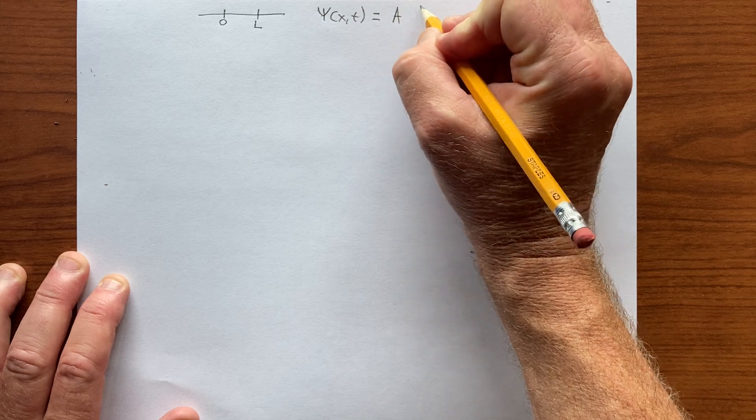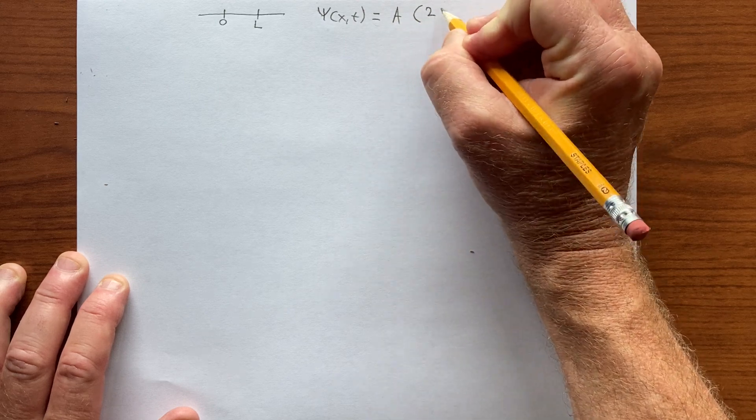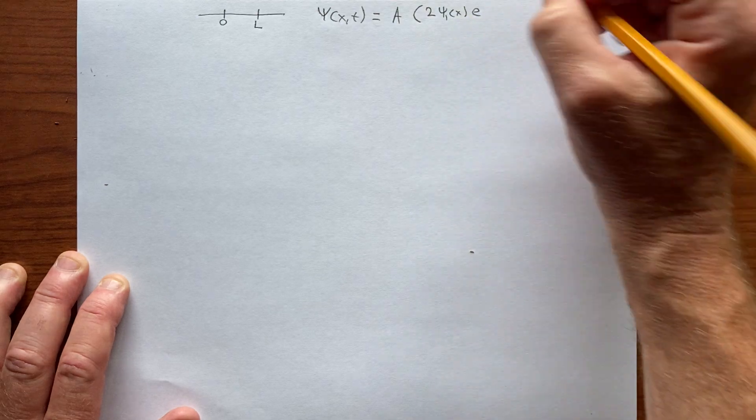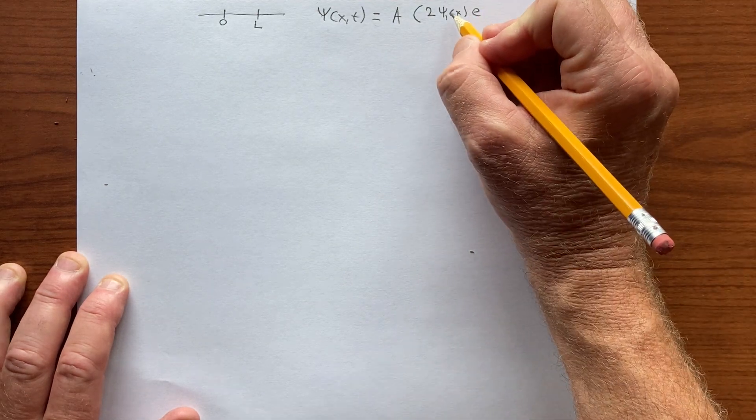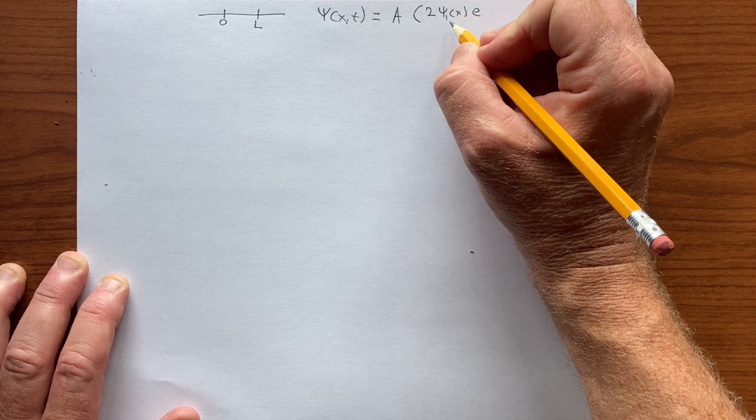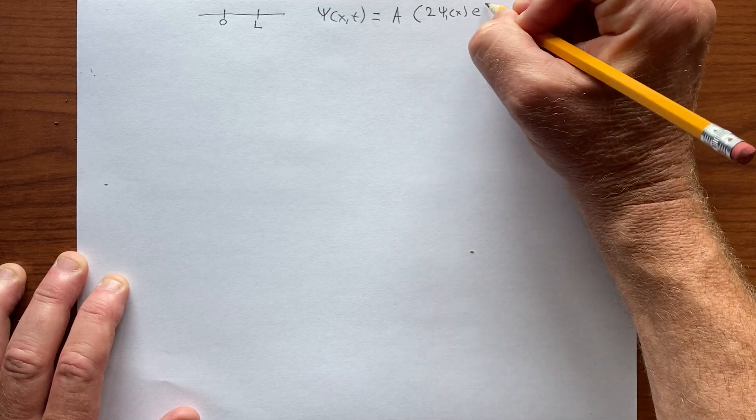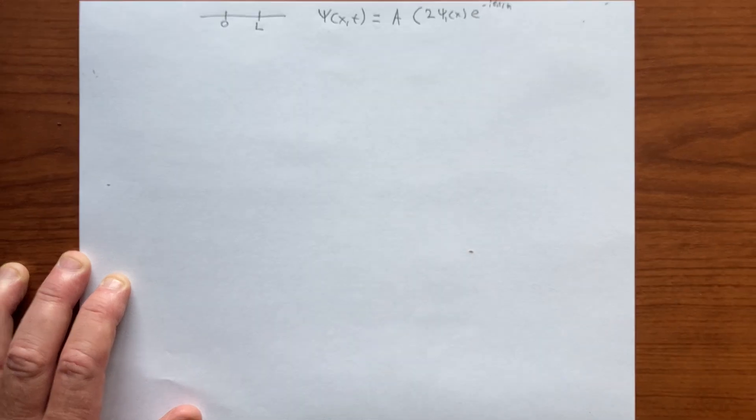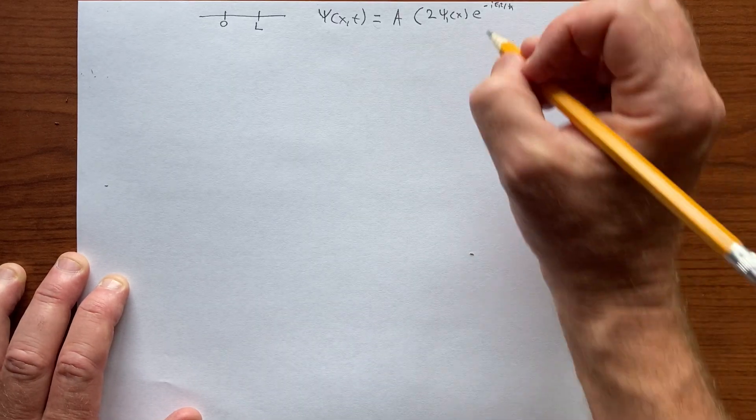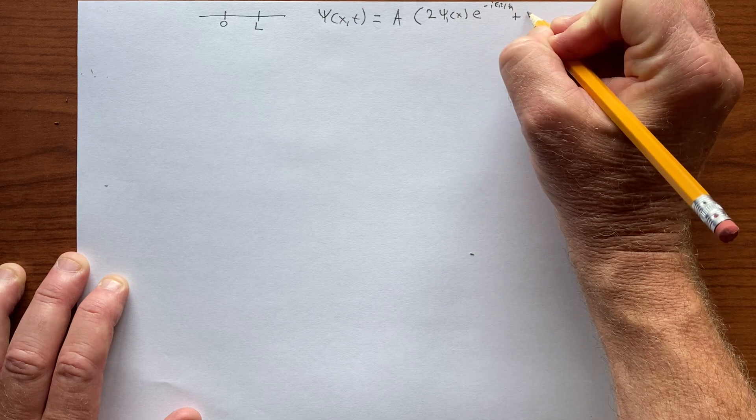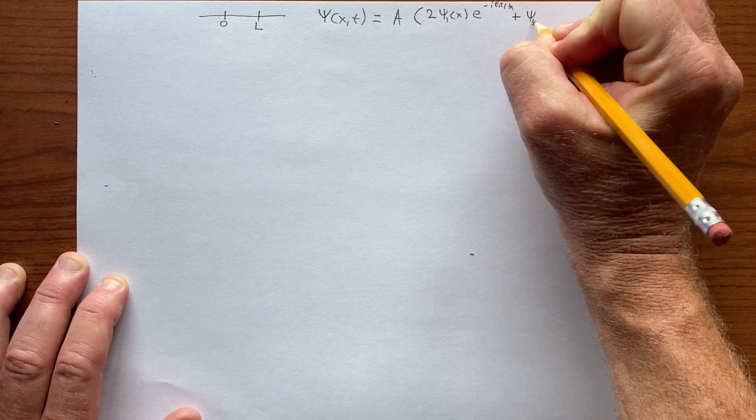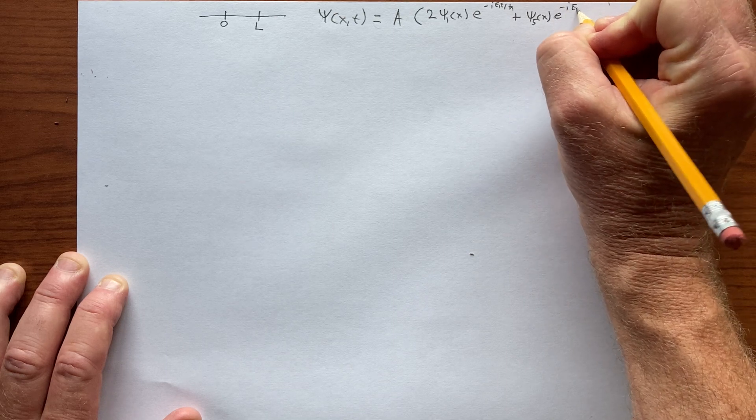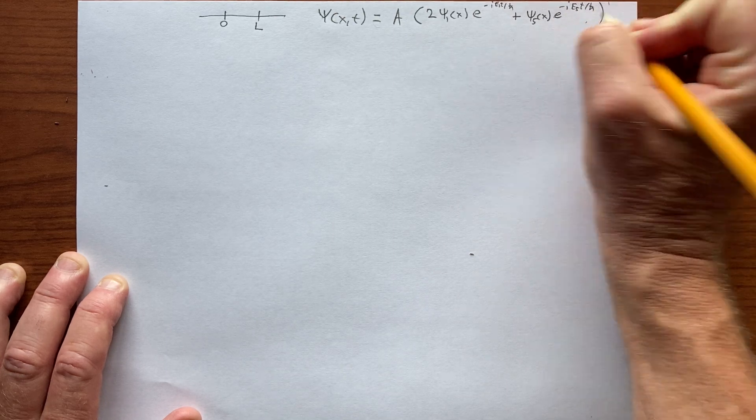So we have some coefficient A, times 2, psi 1 of x. We know what psi 1 of x is, right? It's the square root of 2 over L sine pi x over L. So we have e to the minus i E1 t over h bar, and we'll add A psi 5 of x, e to the minus i E5 t over h bar.